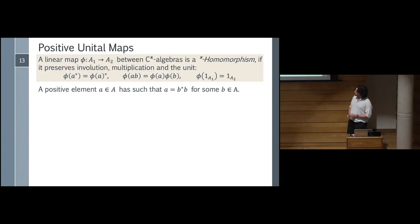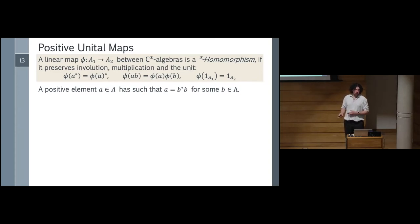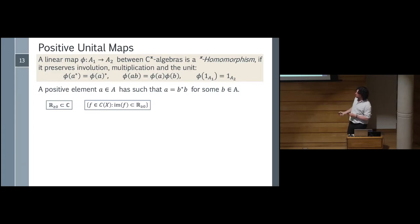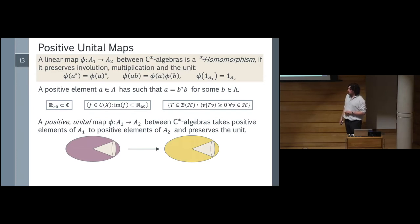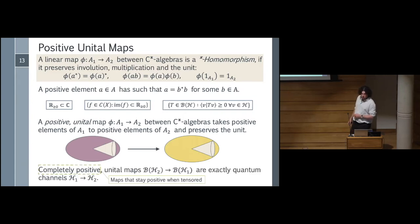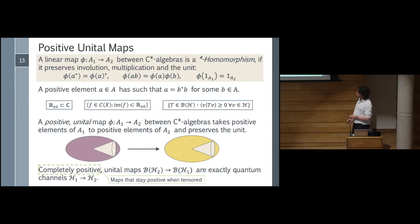So we also want to think about positive elements: an element is positive if there is this square-rooting-like property. A positive element in ℂ is a non-negative real. In C(X), positive elements are those that map directly into non-negative reals. In B(H) we have positive operators. A positive map between C*-algebras maps positive elements to positive elements. Completely positive maps — which are really what's more important to us — are positive maps that stay positive when we tensor things together, because we want to be able to adjoin states and put things alongside each other. So quantum channels are just completely positive unital maps, where the unital condition does the work of trace-preserving.